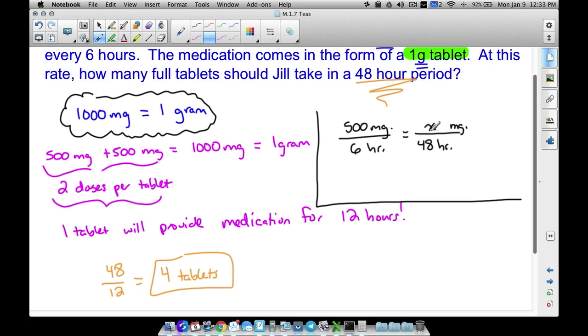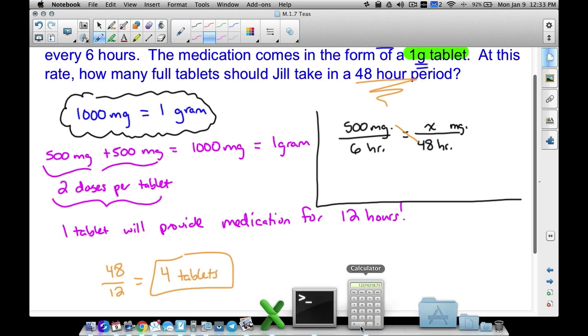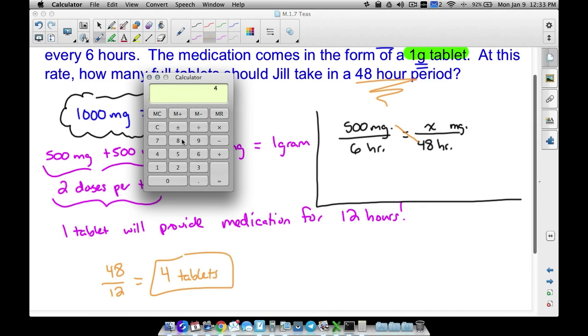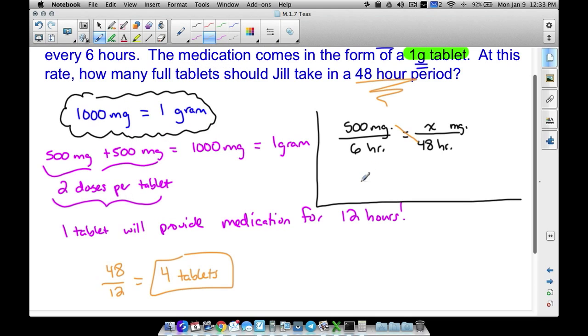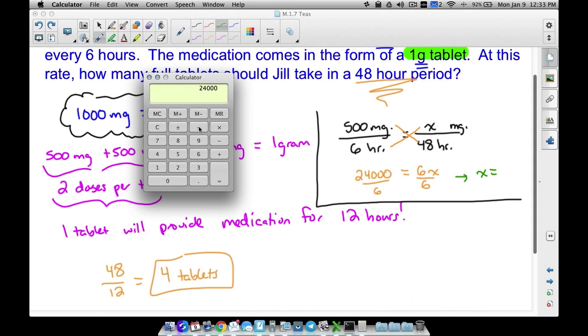Now, let's cross multiply and divide here. So cross multiply in this way. Don't waste your time. Just use your calculator, 48 times 500. We get 24,000. So 24,000 is equal to 6X because I cross multiply the other way. Six times X is 6X. Now let's divide by six, very similar to what we did in the first example. And when we do that, we're going to get X equals 24,000 divided by six. You can use the calculator for that. And we get 4,000.